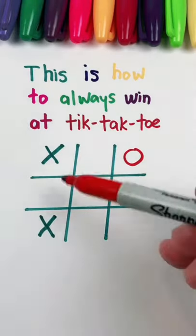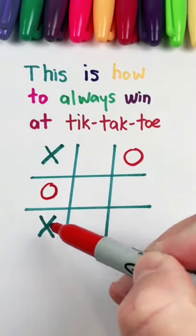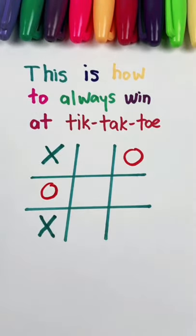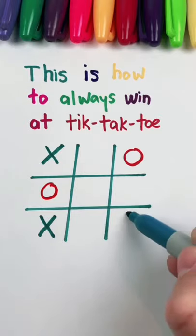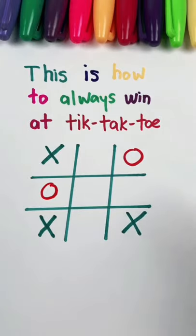And now, the person has to obviously block you right here. And now, this is the move that's basically checkmate. You go right here and the game is basically over.